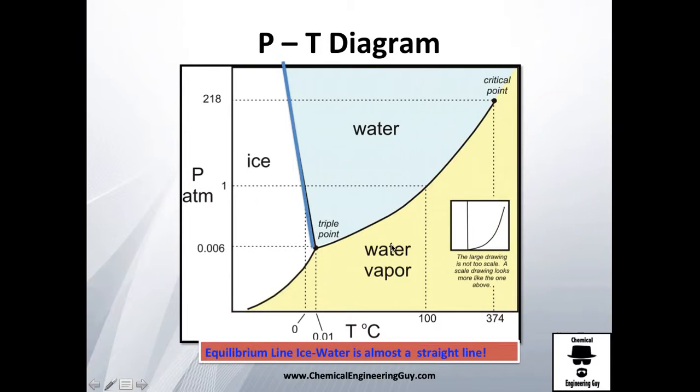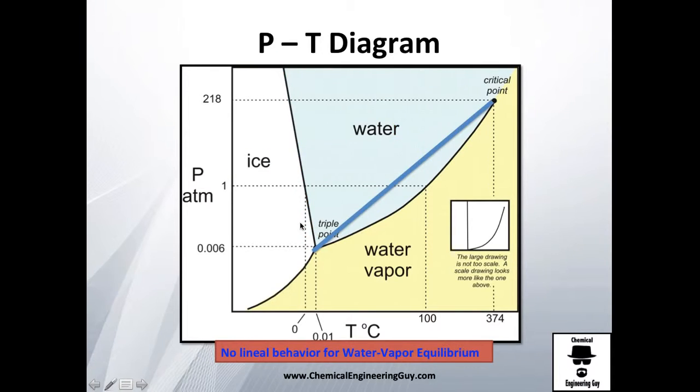Perfect. What else do we have? We have the, once again, the equilibrium line between ice and water, solid and liquid. It's almost a straight line—that's very interesting, especially when getting data. We will be able later to extrapolate data because it's a straight line. Then we get the water-vapor equilibrium, as you can see, and this is not a linear function.